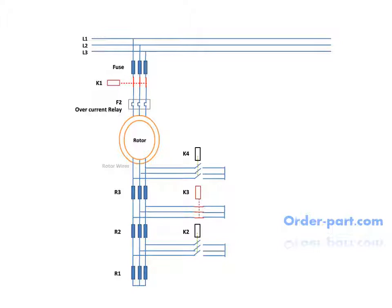After 10 seconds, K3 contactor closes, removing R1 and R2 resistance from the motor. At 15 seconds, K4 contactor closes, meaning all resistances are removed. This results in less starting torque but high linear speed.